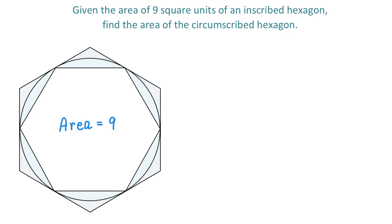In this figure we have an inscribed regular hexagon whose area is 9 square units. This hexagon is inscribed because it is inside of a circle and all the vertices are on the circle. We need to find the area of the circumscribed hexagon.